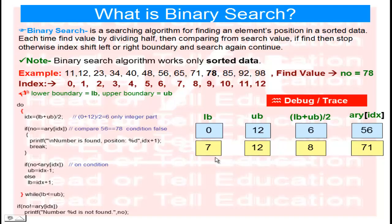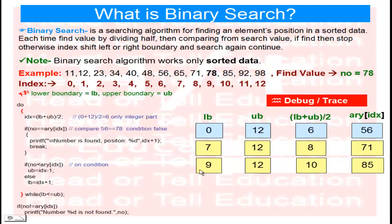Now lower boundary is 9 and upper boundary is 12. Lower plus upper = 21, divided by 2 = 10.5 — taking the integer part, IDX = 10. At the 10th index position, the value is 85.